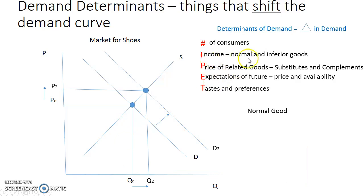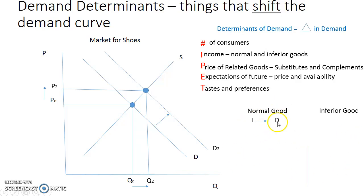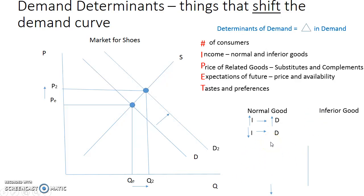Let's look at income with normal versus inferior goods. Most goods are normal goods. When we look at this determinant of demand, we're looking at the relationship between income and demand. For a normal good, there's a positive relationship: when income goes up, demand also goes up. Most goods are normal goods. However, when income goes down for a normal good, demand goes down.